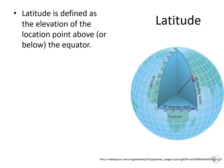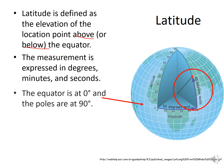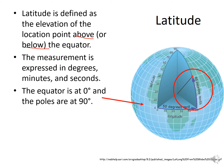Latitude is defined as the elevation of a location point above or below the equator. The measurements are expressed in degrees, minutes, and seconds — for example, 40 degrees North, 50 degrees East. The equator is at zero, and the poles are at 90. So the equator is always at zero, and then you have your North Pole and South Pole. The equator goes all the way around.